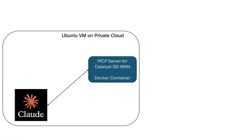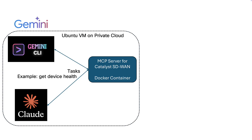Here's how it works. Nick's AI tool, Claude, will generate a new MCP server for Catalyst SD-WAN. Nick will install this MCP server as a Docker container on an Ubuntu VM running in his private cloud. Then his private AI — in this case Gemini — will use the new MCP server to run tasks like getting device health and checking software image.